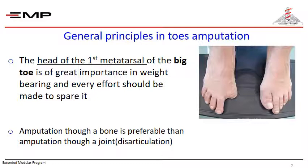Whenever possible, amputation through a bone is preferred over amputation through a joint — which is called disarticulation — because this preserves the attachment of the flexor and extensor tendons at the base of the phalanx, thus maximizing the power retained at the stump.